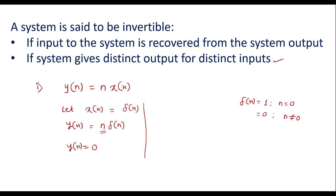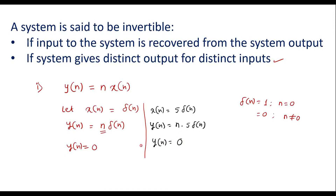Now let me take another value of x of n. Let x of n equal phi times delta of n. In this case, we will see what we get for y of n. So y of n equals n times phi times delta of n. Since delta of n is defined only for n equal to 0, here also we will get y of n equal to 0 because n is 0. So the entire term will be 0. We can observe that for both inputs — delta of n and phi times delta of n — we got y of n equal to 0, meaning two different inputs gave the same output.